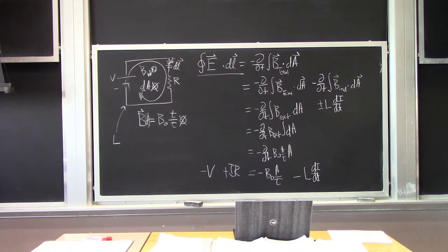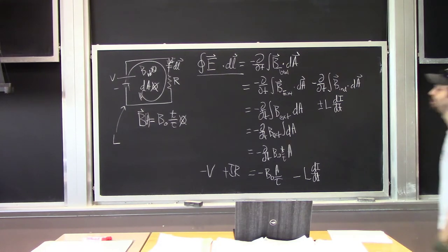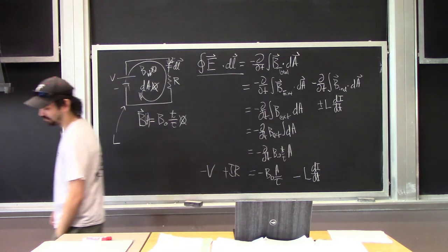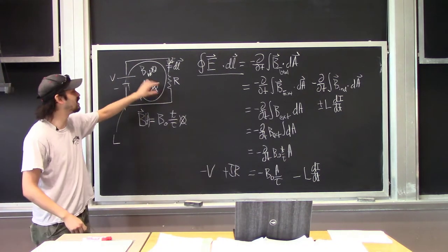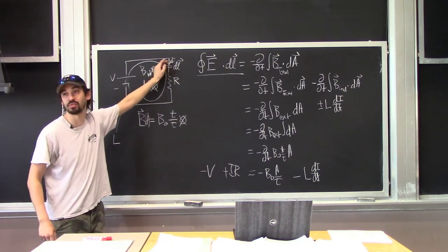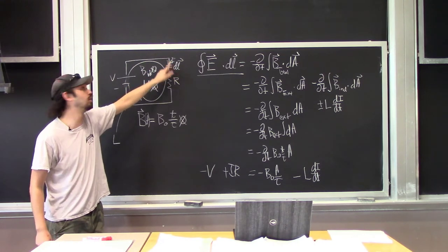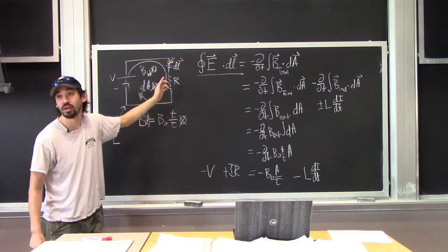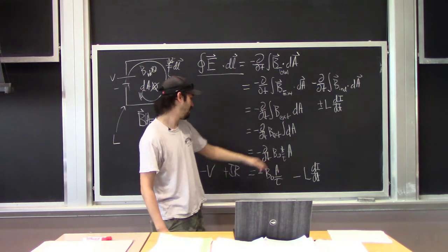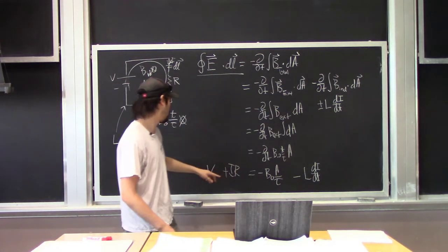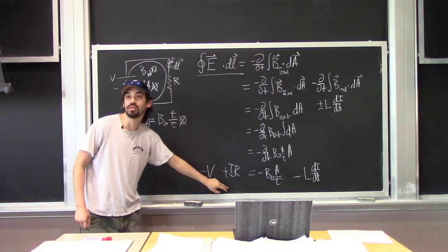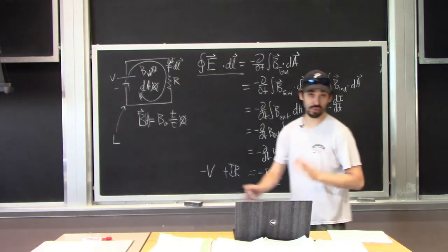Follow-up question: will it always be negative because of the way we chose DA initially? Yes — it comes down to fixing DA in the same direction as the external magnetic field, in conjunction with choosing the current in the same direction as dL. If you chose the current to go the other way, you'd get another negative sign there, but the negative signs always take care of each other. You just have to be consistent.